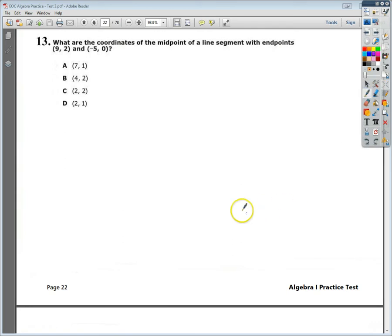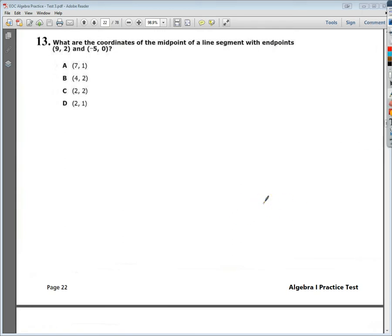So in this situation I would have something along the lines of 9 and 2, if I were to do this whole graph thing here, and then negative 5 and 0, so kind of that area. They want to know what the midpoint of it is.